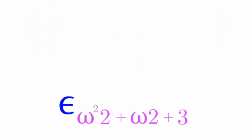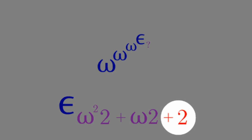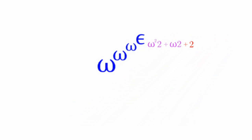So epsilon_{ω³} turns into omega to the omega to the omega to the epsilon — but with what index? Because we have a plus 3, this reduces into just plus 2. This becomes the index of epsilon.